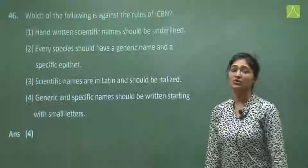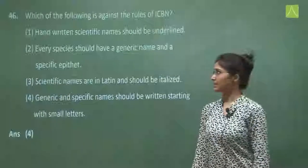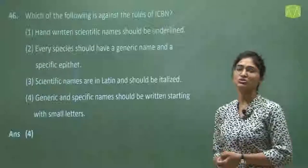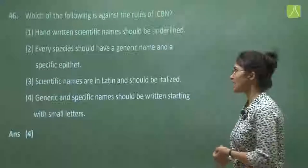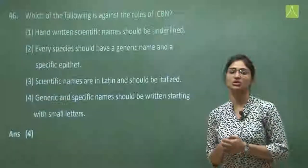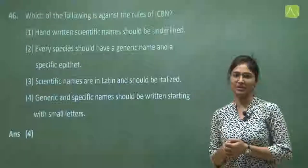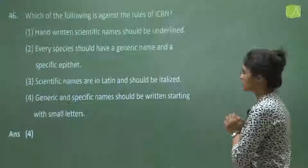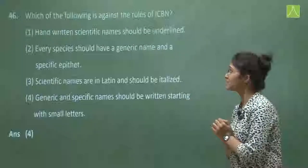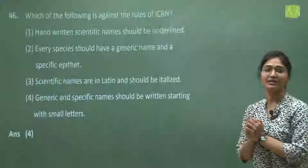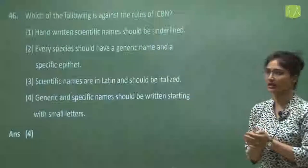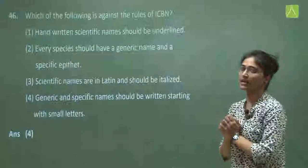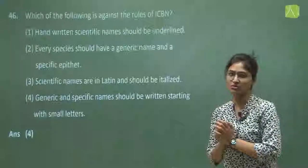Question 46 asks which of the following is against the rules of ICBN, which stands for International Code of Botanical Nomenclature. The first option says handwritten scientific names should be underlined — this is correct. The second option says every species should have a generic name and a specific epithet — this is also correct.